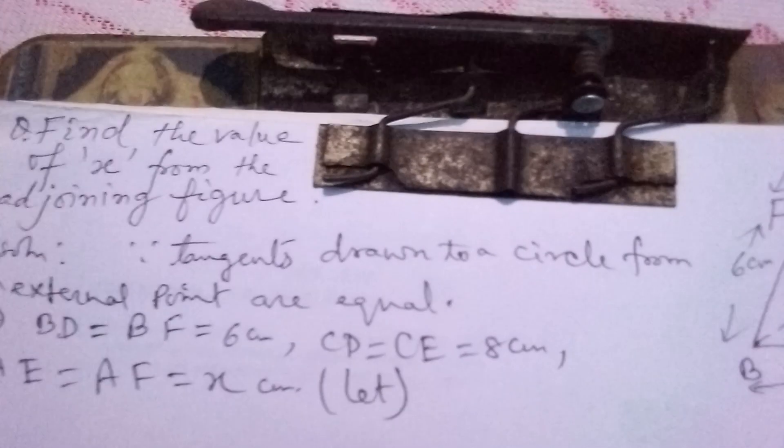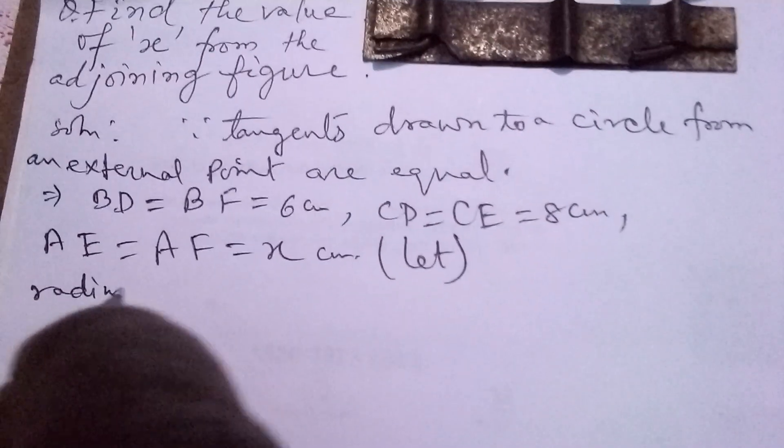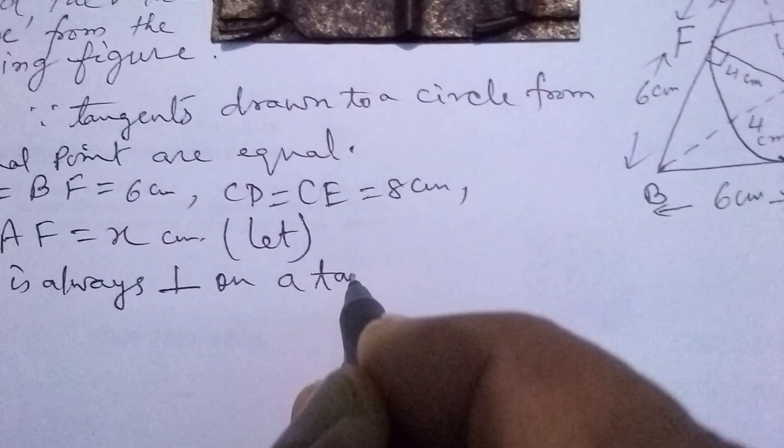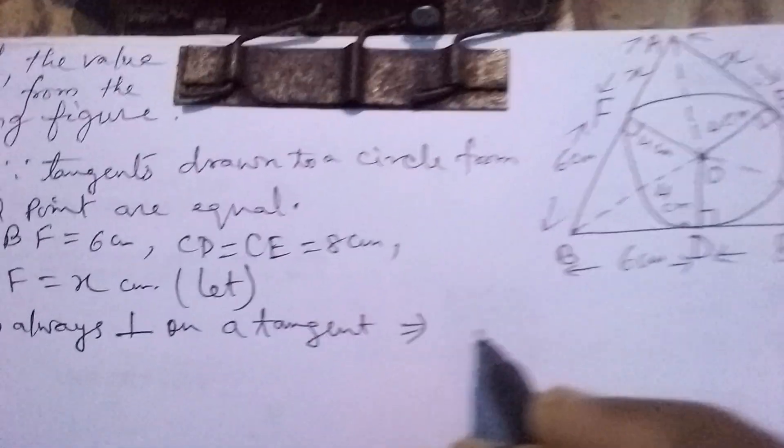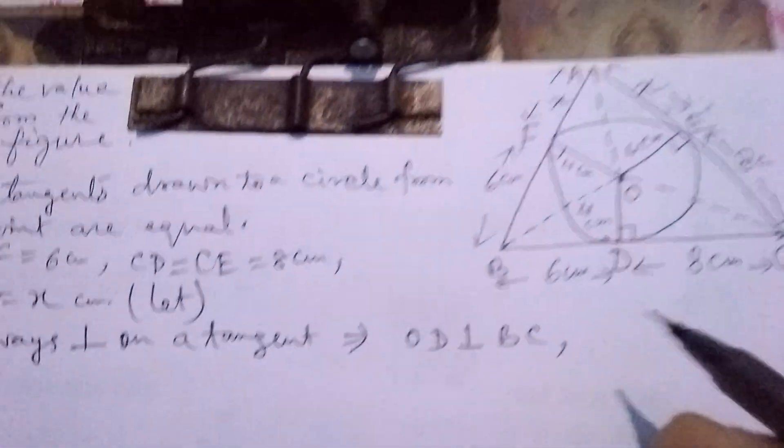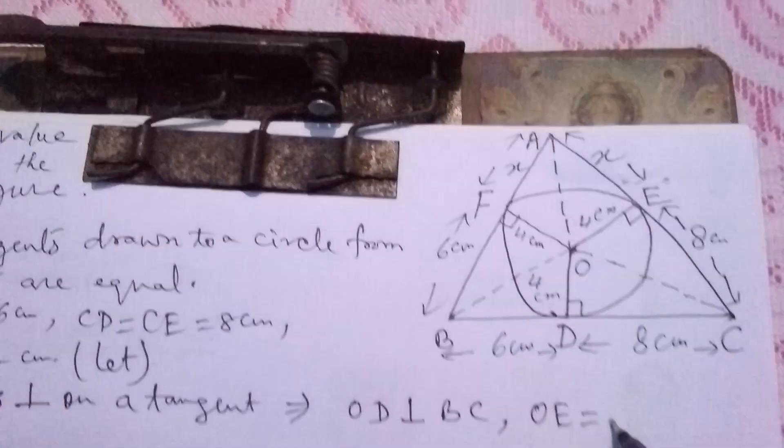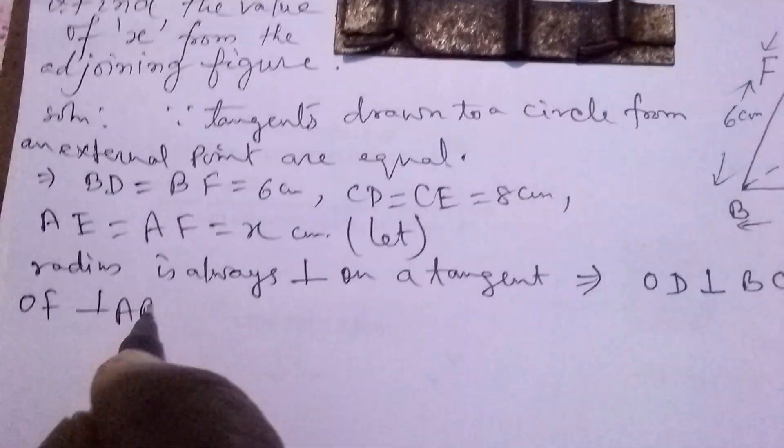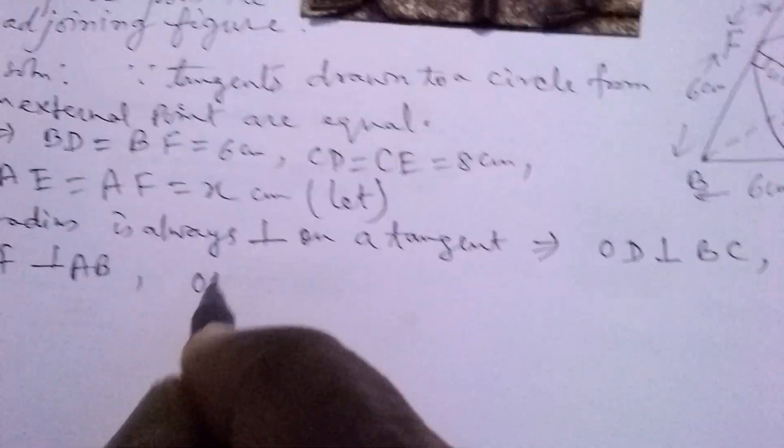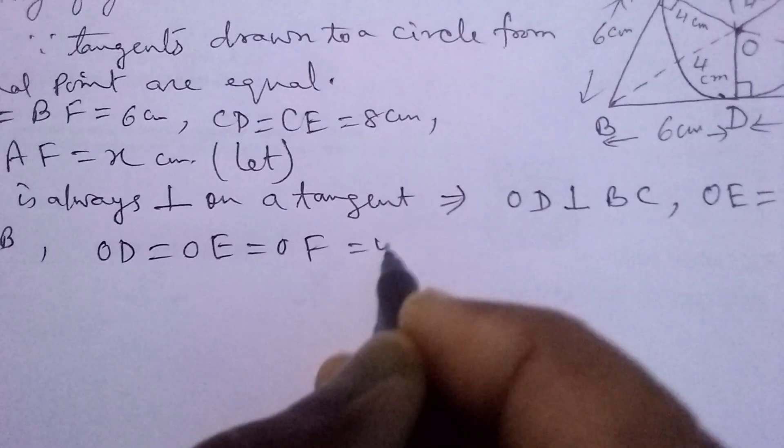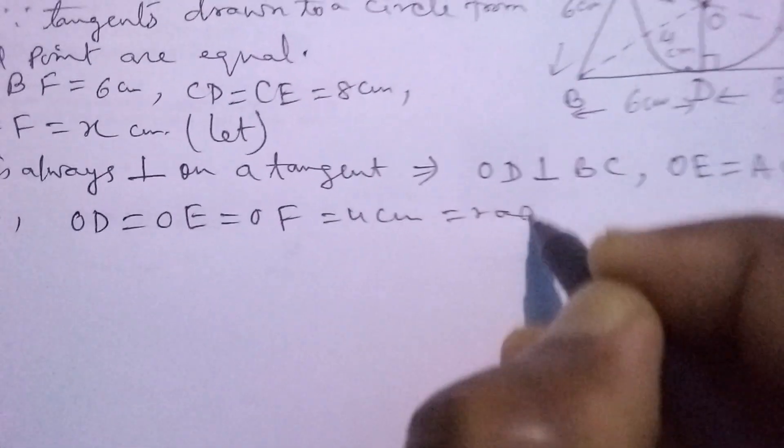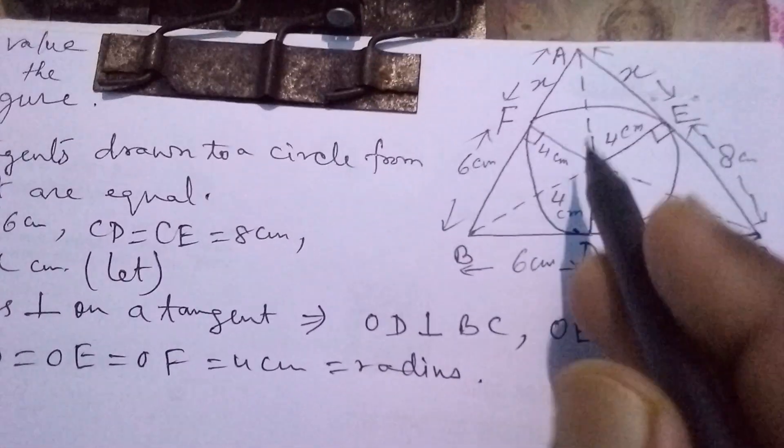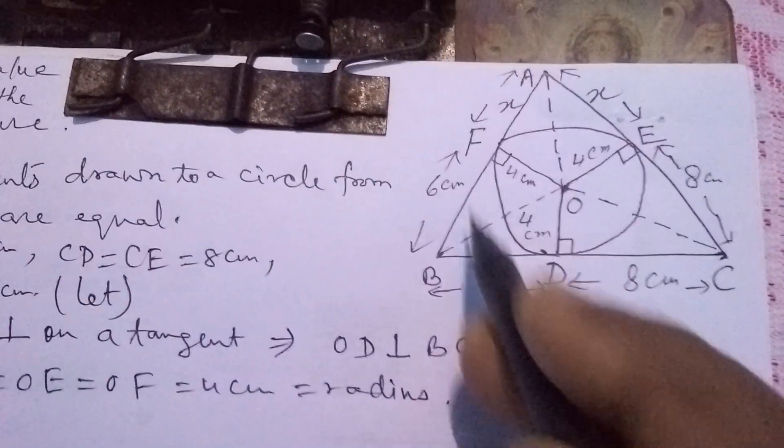Now, radius is always perpendicular on a tangent, so we find that OD is perpendicular on BC, OE is perpendicular on AC, and OF is perpendicular on AB. Here OD equals OE equals OF equals 4cm, which is the radius of the circle, and this circle is inscribed in the triangle.